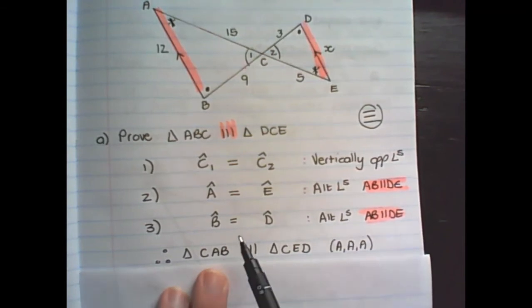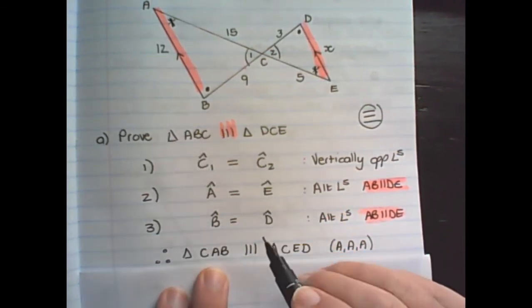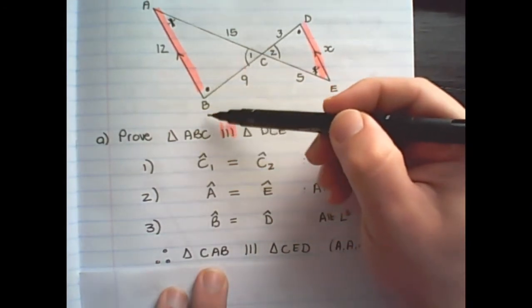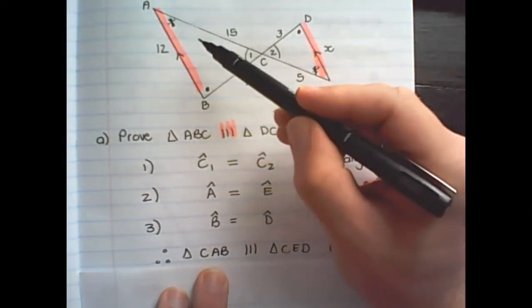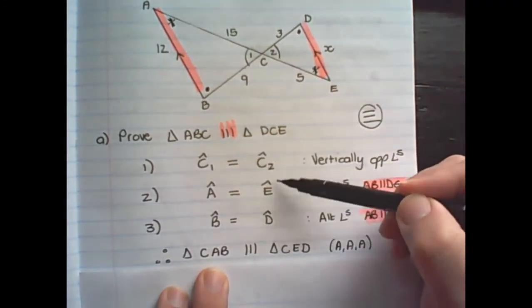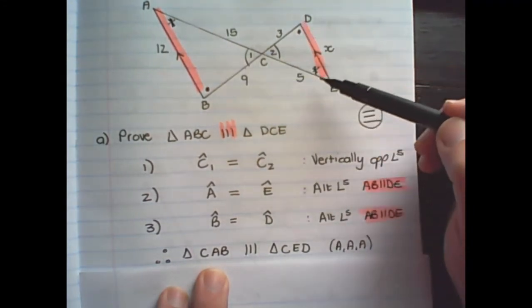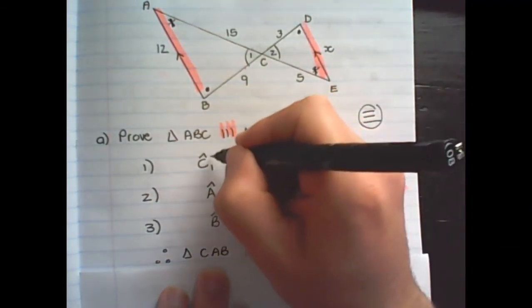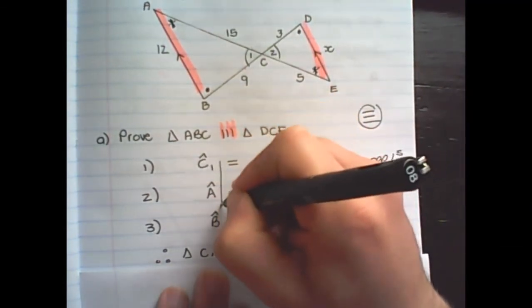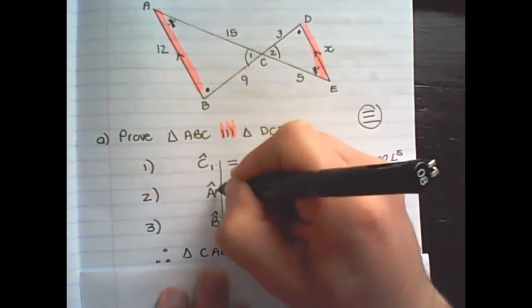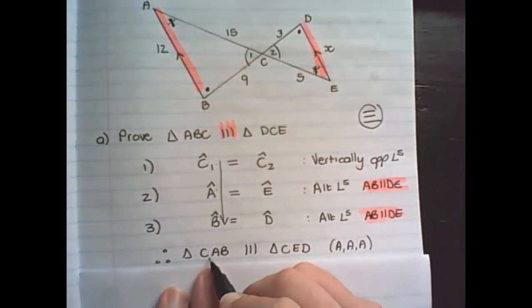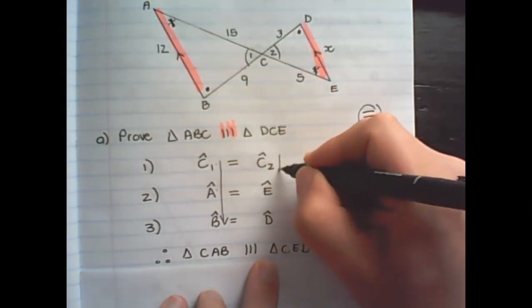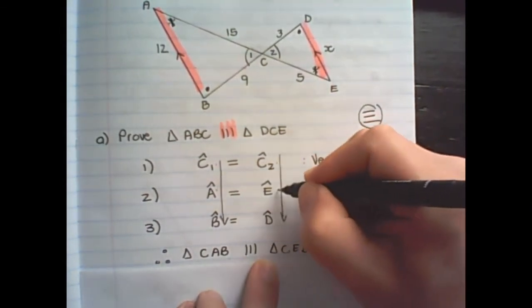And notice I changed the letters around. So on the left hand side I used all the information in triangle ABC. And on the right hand side I used all the information of triangle DCE. But the way I wrote the similarity is I went from top to bottom. CAB. And that's the order of the letters here. And this second triangle is CED.